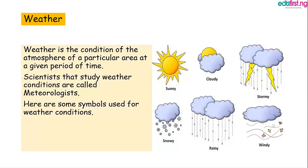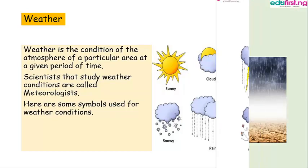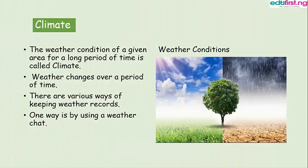Let us now look at the relationship between weather and climate. The weather condition of a given area for a long period of time is called climate. So, the difference is: to determine the climate of a particular area, a long period of time must pass, usually many years.